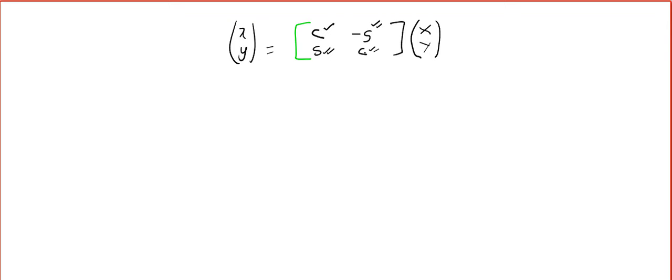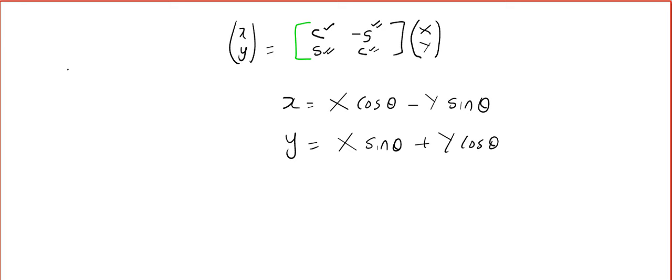Let us learn the formula for rotation. There is a matrix: cos θ  −sin θ / sin θ  cos θ. This is called the rotational matrix. The proper formula goes like this: small xy = [cos θ  −sin θ; sin θ  cos θ] into XY. Using matrix multiplication, the formula gives: x = X cos θ − Y sin θ, and y = X sin θ + Y cos θ. This rotates the axis through an angle θ in the anti-clockwise direction.